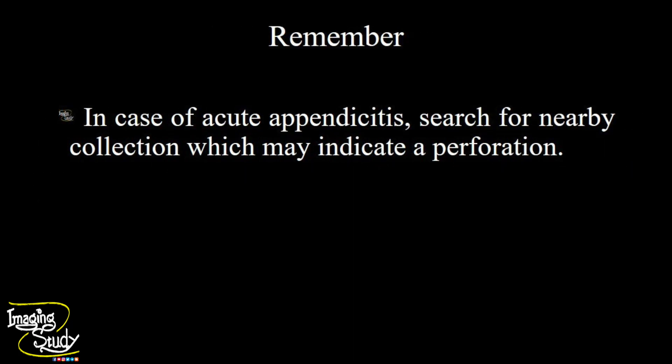Now the take-home message. In case of acute appendicitis, search for nearby collections which may indicate perforation. A small amount of collection may indicate inflammatory collection, but if you get a good amount of collection, then suspect perforation. For further confirmation on ultrasound, you can check for any breach in the continuity of the echogenic wall, which may help further.